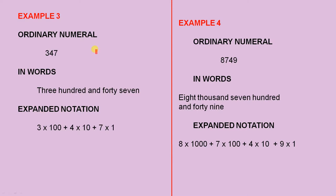The next example, 347. There is the ordinary numeral. Three hundred and forty-seven, that's writing it out. In expanded notation, three times a hundred, plus four times ten, plus seven times one.